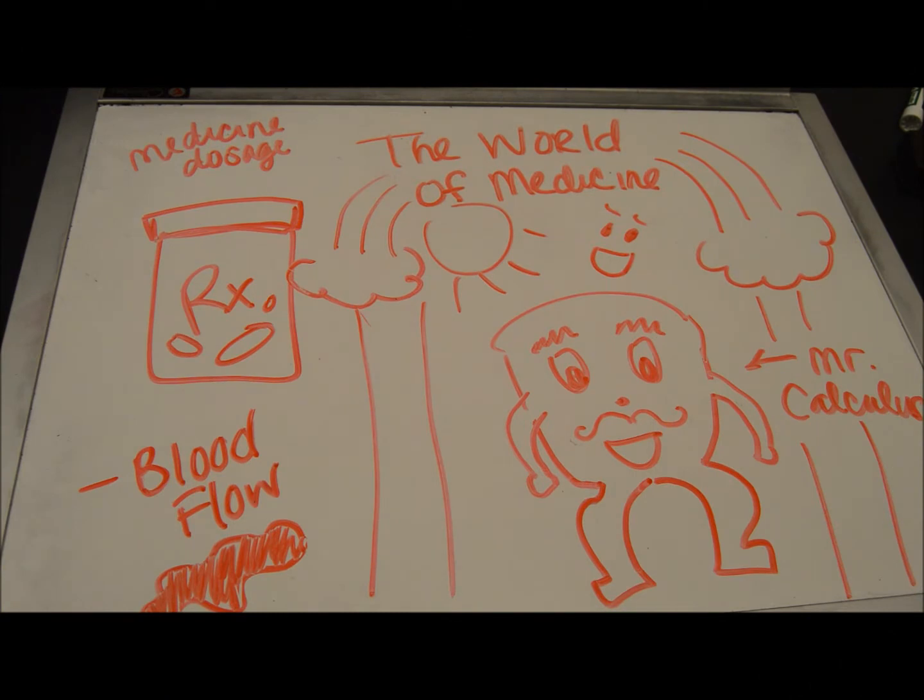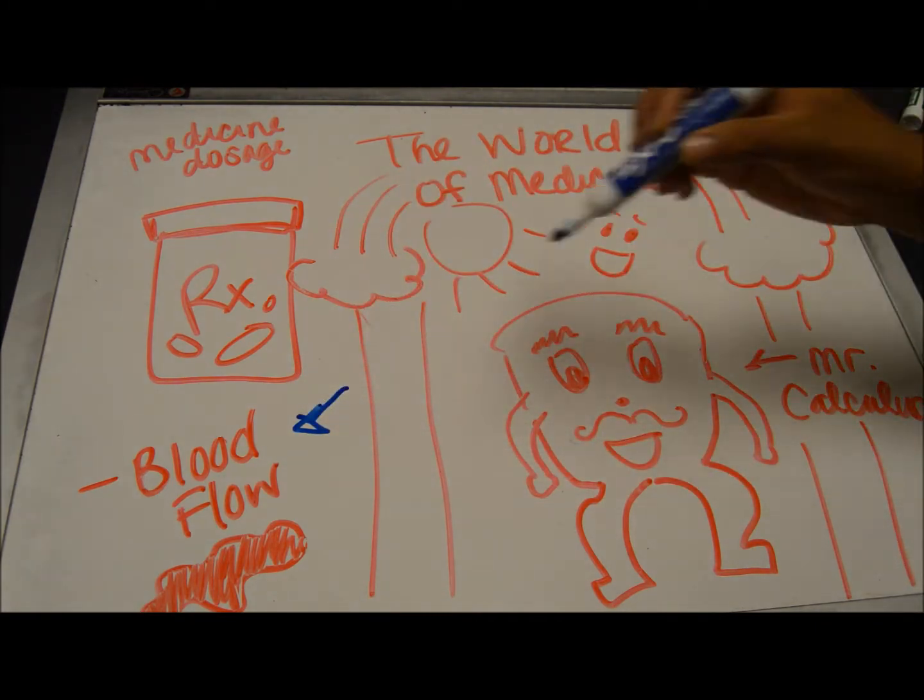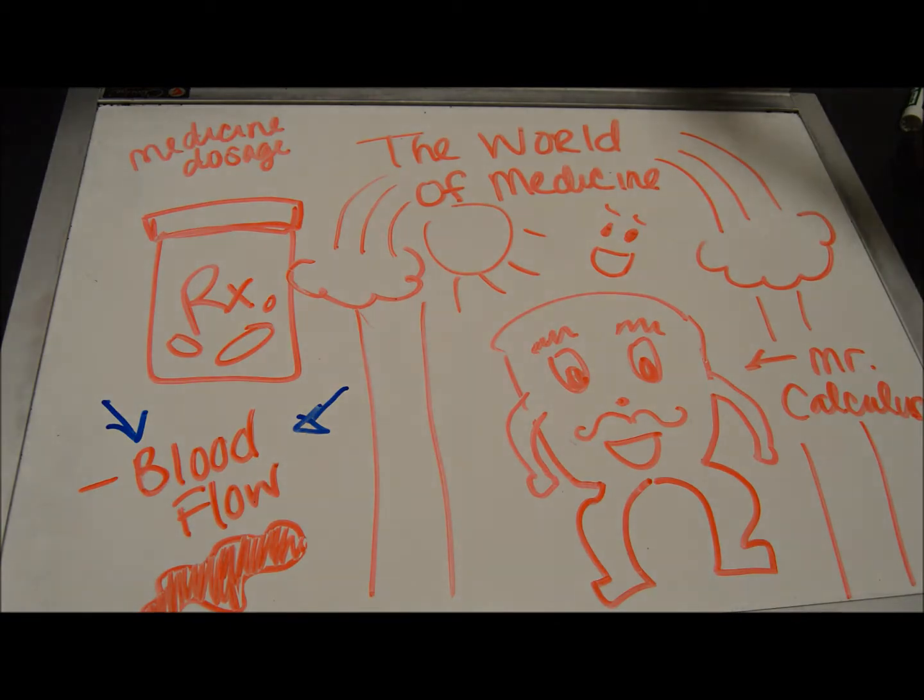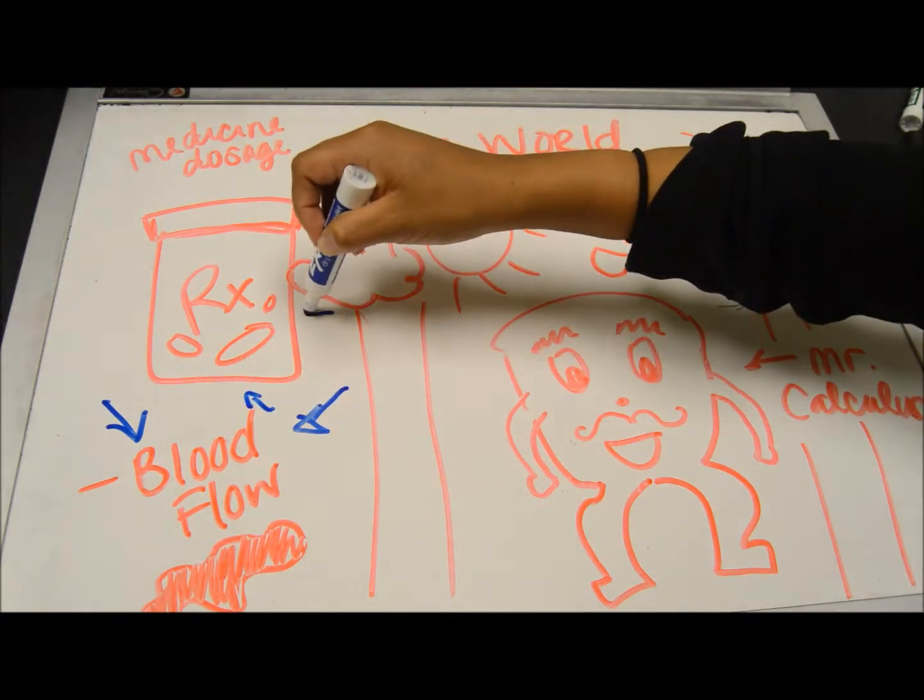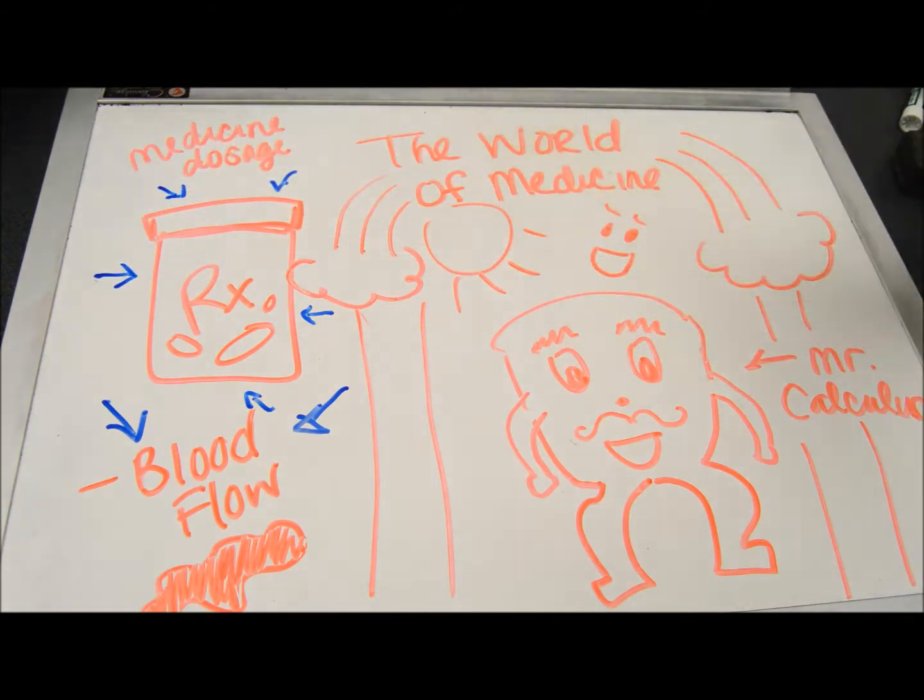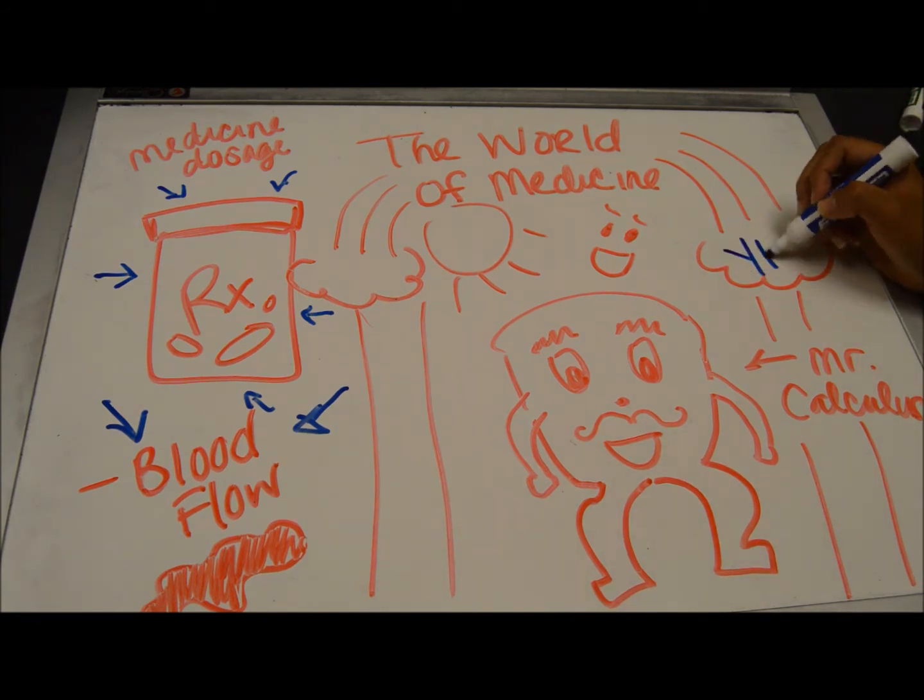Calculus is used in all aspects of medicine, such as determining the blood flow in artery or vein, calculating the amount of blood flow pumped to the heart per unit in time, calculating the proper medicine dosage, and many, many more. But today, we are going to discuss how calculus can be applied to detect tumor growth in humans.